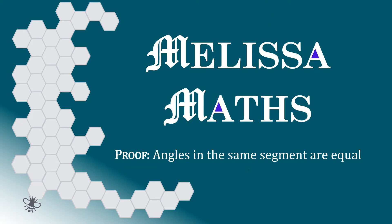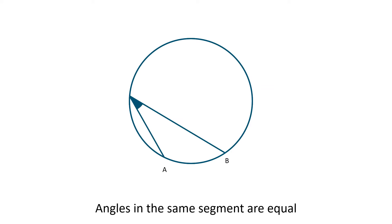Angles in the same segment are equal. All the angles made on the circumference from chords from two points will be equal in the same arc.